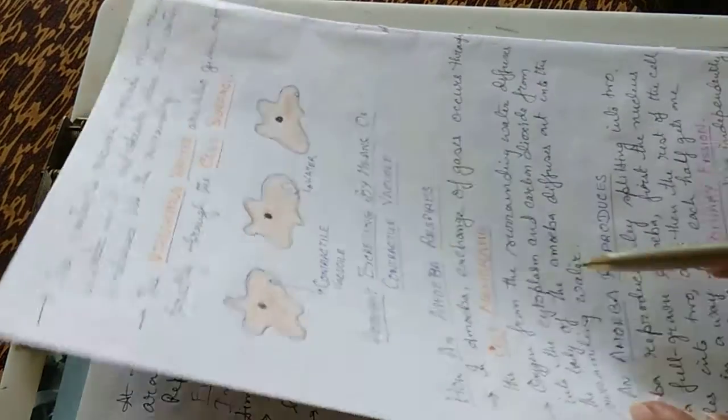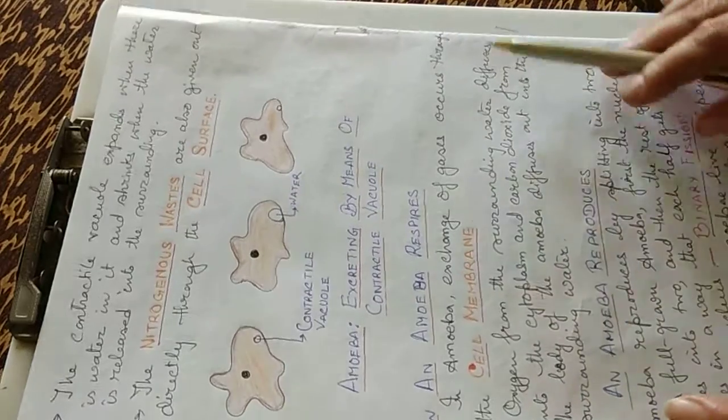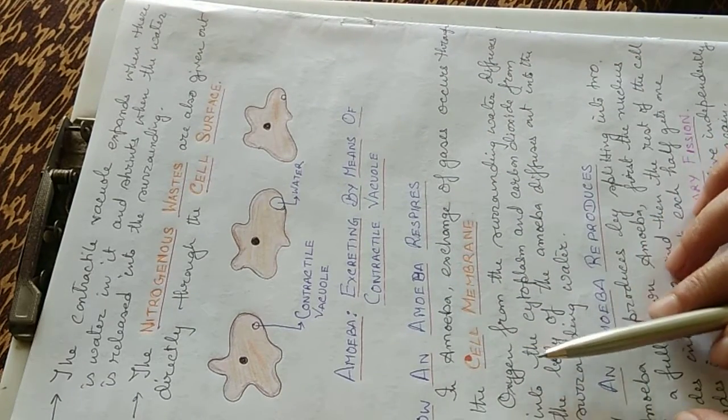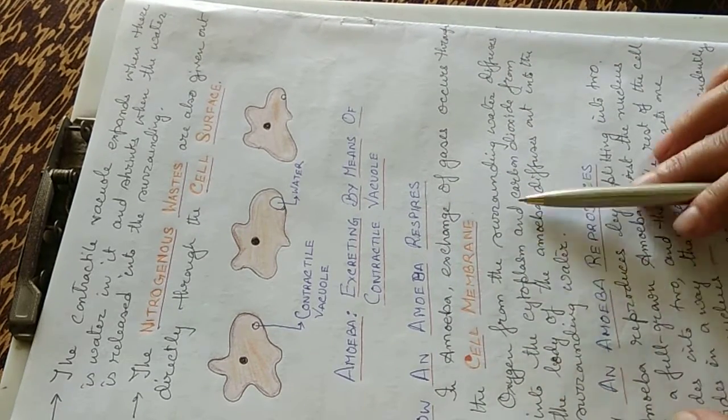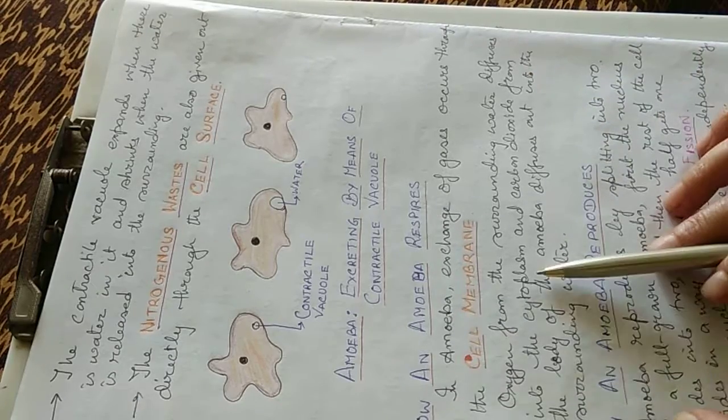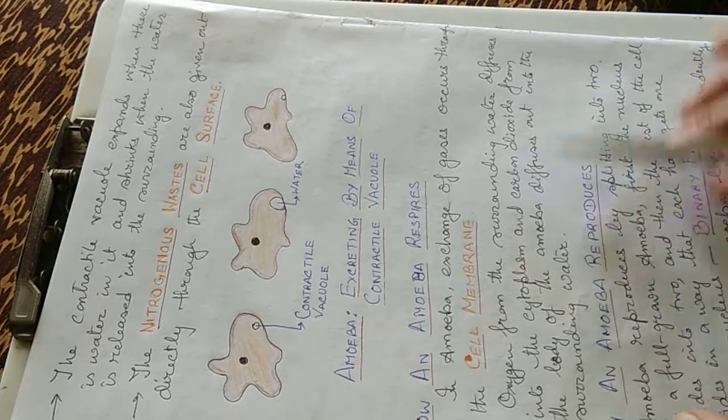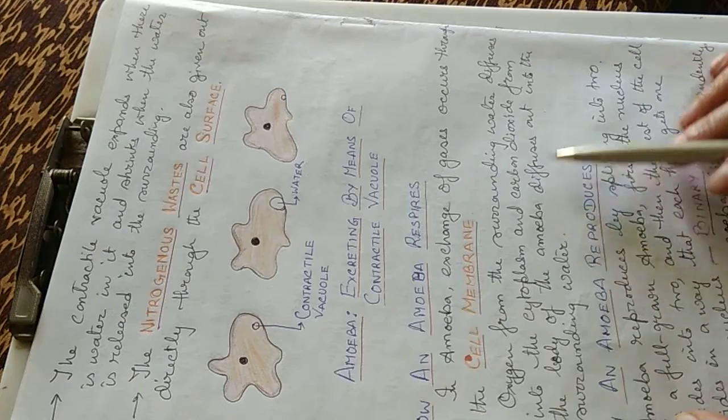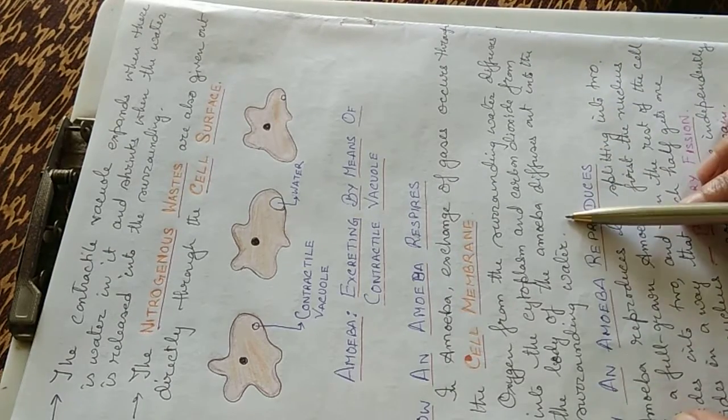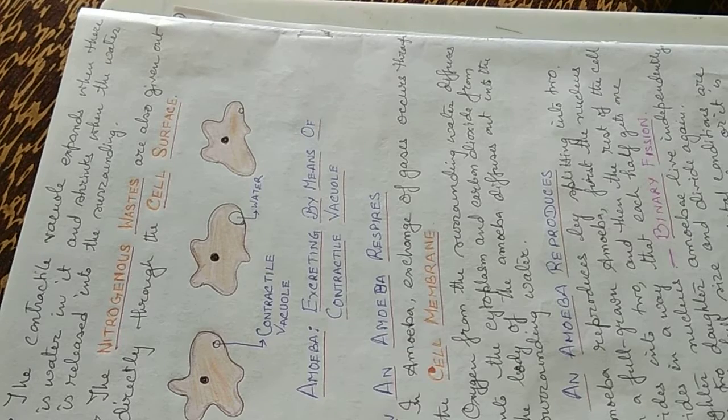How does it respire? In amoeba exchange of gases occurs through the cell membrane. Oxygen from the surrounding water diffuses into the cytoplasm and carbon dioxide from the body of the amoeba diffuses out into the surrounding water. Diffusion is the main process by which exchange of gases takes place.